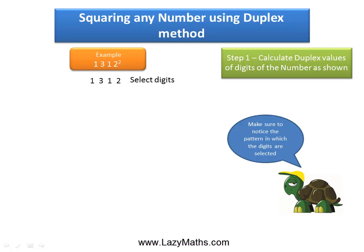Make sure you notice the pattern as we select the digits. The first digit we select is the last digit which is in the ones place, in this case it's 2. The duplex value of 2 is 2 squared which is 4 and we write it down as 04.